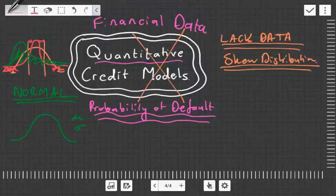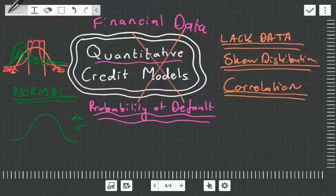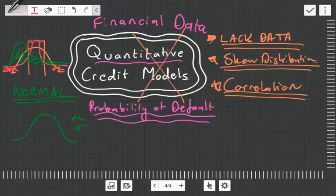Another thing these models don't take into consideration because of mathematical limitations is correlations — the fact that if one person defaults, it's more likely that other people are going to default. The reason is that person may have defaulted because of terrible economic conditions, which are now affecting everybody. Hence, one default will cause a domino effect. Correlations are very difficult to handle mathematically, especially when we're lacking data. So these models have three major weaknesses: lack of data, skewness of distributions, and correlation not being taken into account.